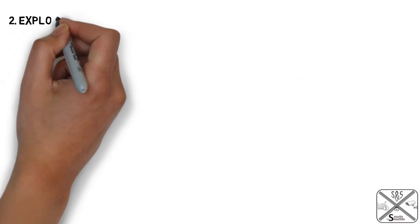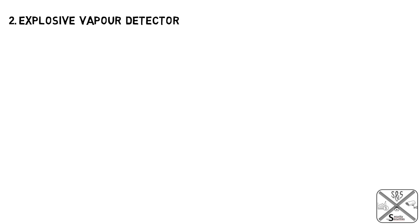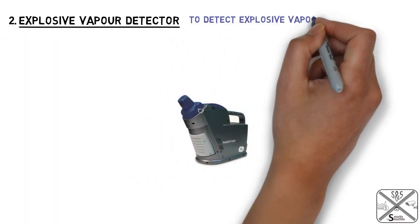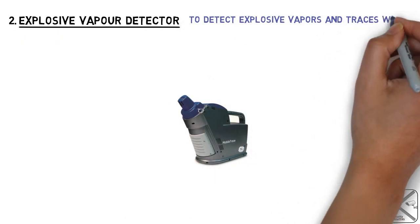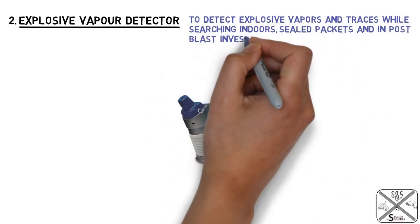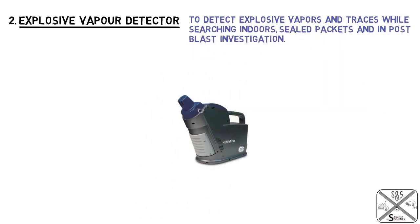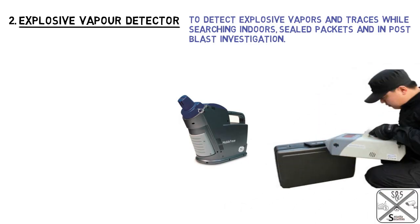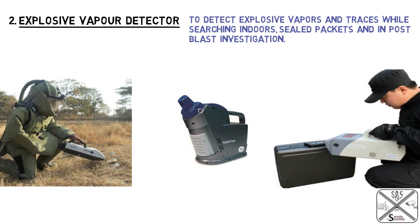Second is the explosive vapor detector, which is used to detect explosive vapors and traces while searching indoors, sealed packets, and in post-blast investigations. Trace detection involves the chemical detection of explosives by collecting and analyzing tiny amounts of explosive vapor.